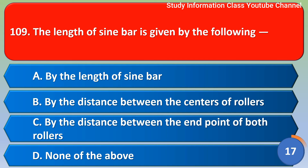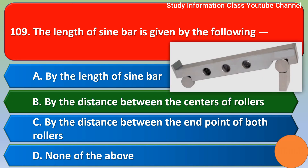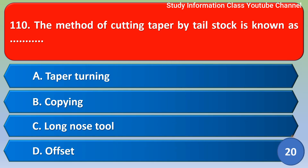Next question: the length of a sine bar is given by — option B: the distance between the centers of the rollers. The correct answer is option B, the distance between the centers of the rollers.